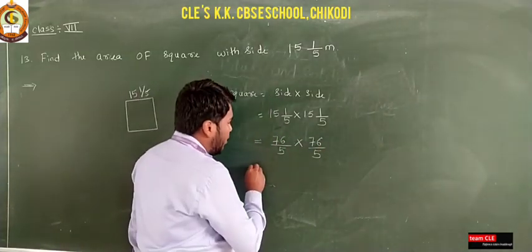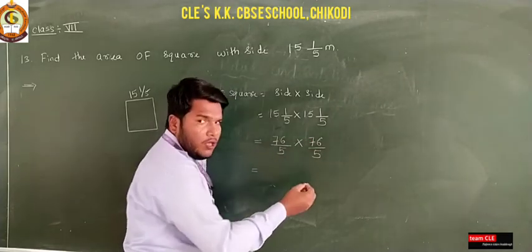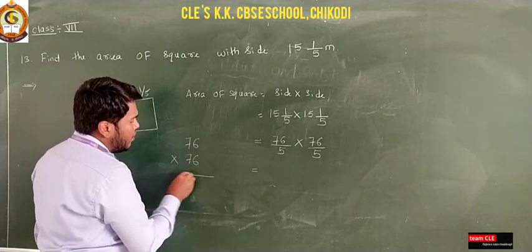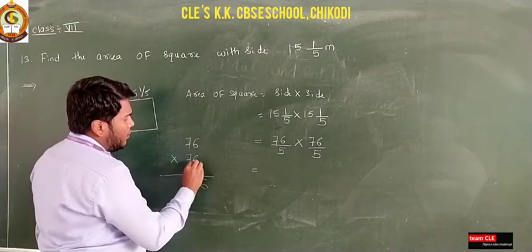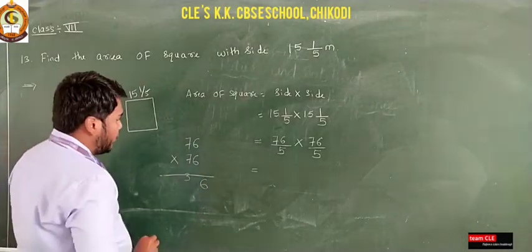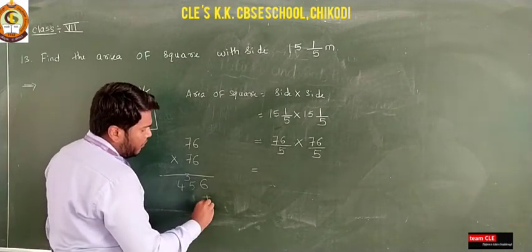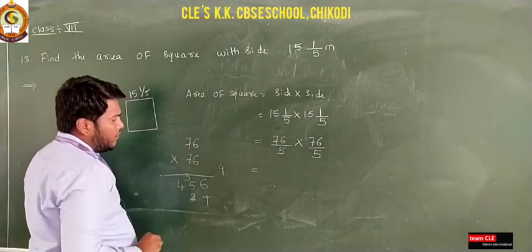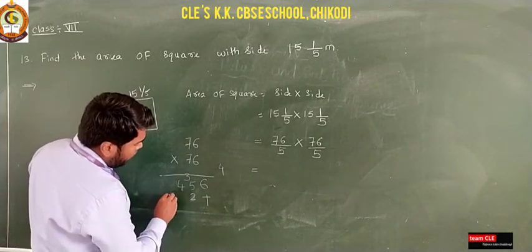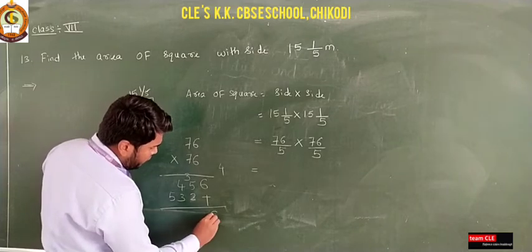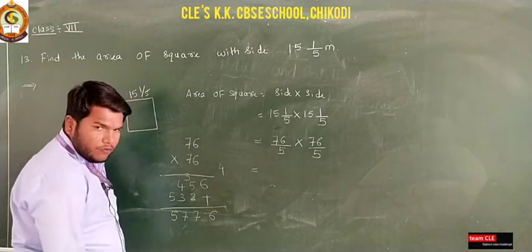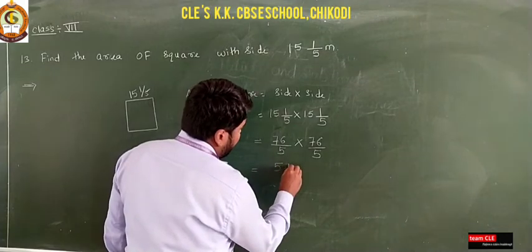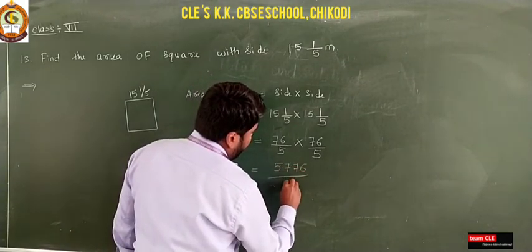Now multiply numerator with numerator and denominator with denominator. So we calculate 76 × 76: 6 × 6 = 36, carry 3; 6 × 7 = 42, plus 3 = 45; then 7 × 6 = 42, carry 4; 7 × 7 = 49, plus 4 = 53. The result is 5776. So we get 5776 divided by 25.